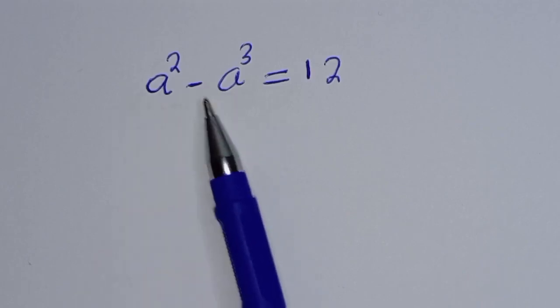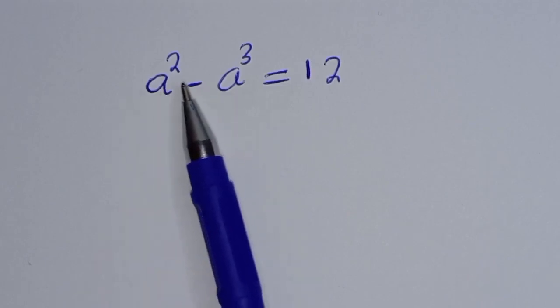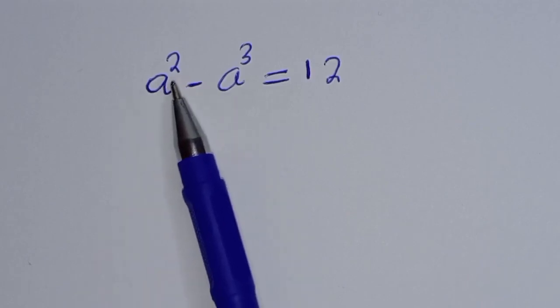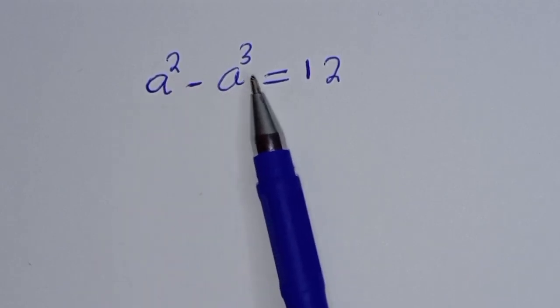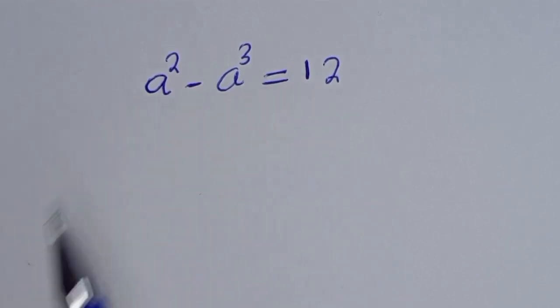How to solve for a from this given math problem: a squared minus a raised to power 3 is equal to 12.